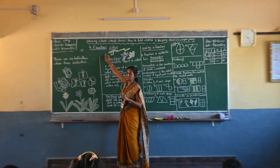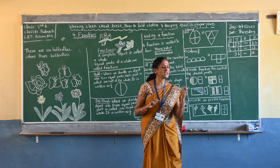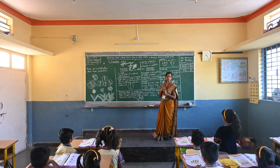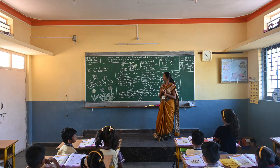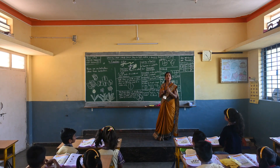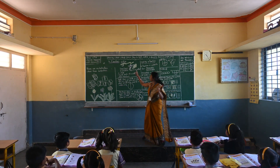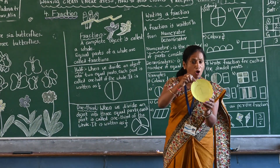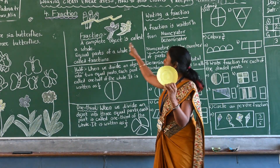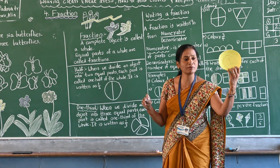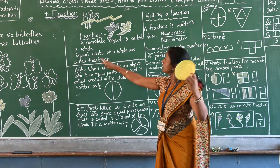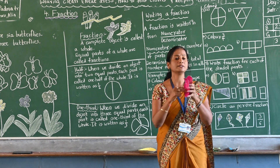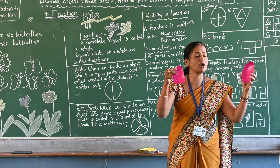We are learning fractions. Aria, tell me, what is a fraction? A complete object is called a whole. Equal parts of a whole are called fractions. Now again I will repeat this one. See — a complete object. This is a complete object, so it is called a whole. Equal parts of a whole are called fractions. Whenever we are making a part, this is an equal part and it is called a fraction.